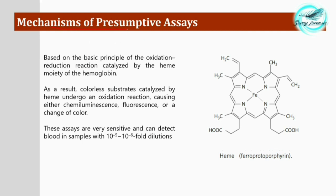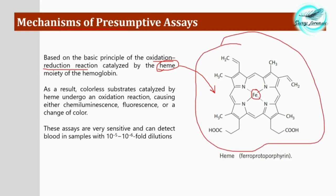Let's understand the mechanism of the presumptive assay briefly. It is based on an oxidation-reduction reaction catalyzed by heme. This is the molecular structure of heme — it consists of two parts: the ferrous part and the protoporphyrin ring, together called ferro-protoporphyrin. Let's see how it plays a major role in the identification of blood.